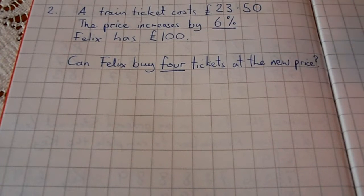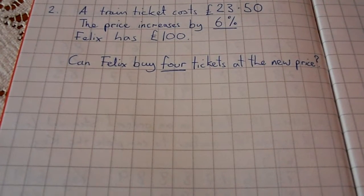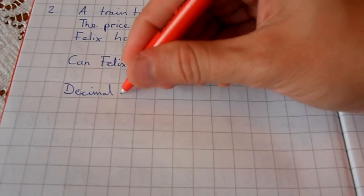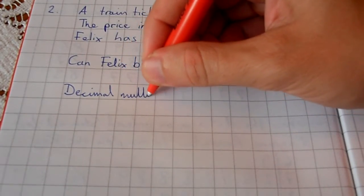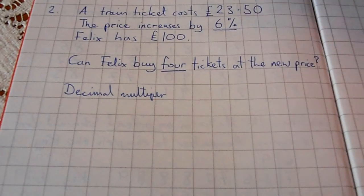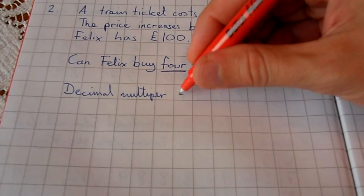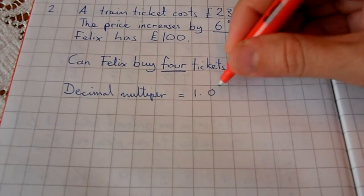First, because this is a calculator paper, we can save time using the decimal multiplier, which is the number we multiply our original number by to give us the percentage increase. The decimal multiplier is 1.06.